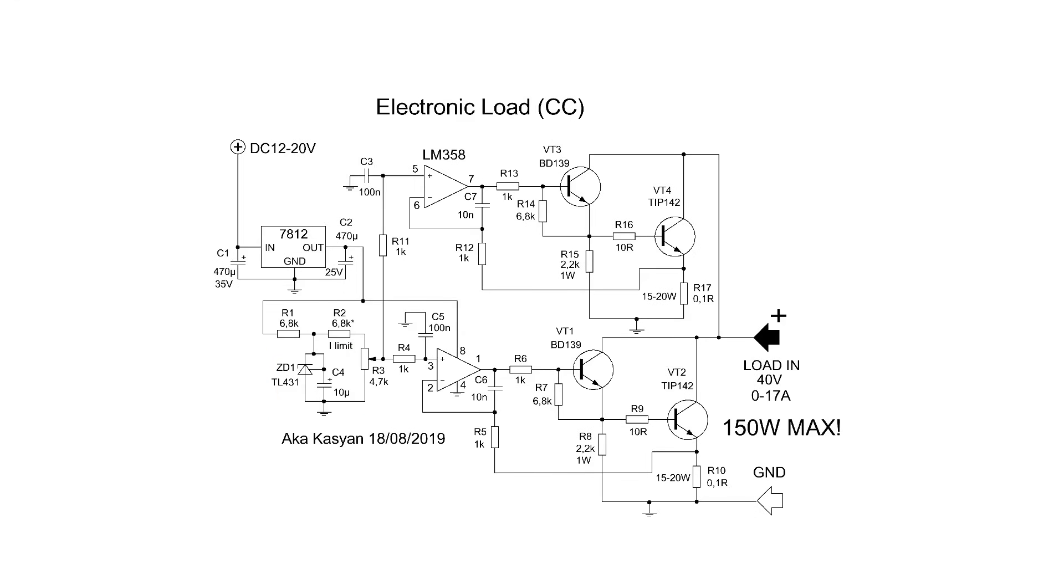In the emitter circuit of the load transistor, there is a low-resistance resistor acting as a current sensor. During the operation of the load, quite large currents will flow through this resistor, which will lead to a voltage drop across it. This voltage is fed to one of the inputs of the operational amplifier. The reference voltage, which we can manually adjust by turning the variable resistor, is fed to the other input.